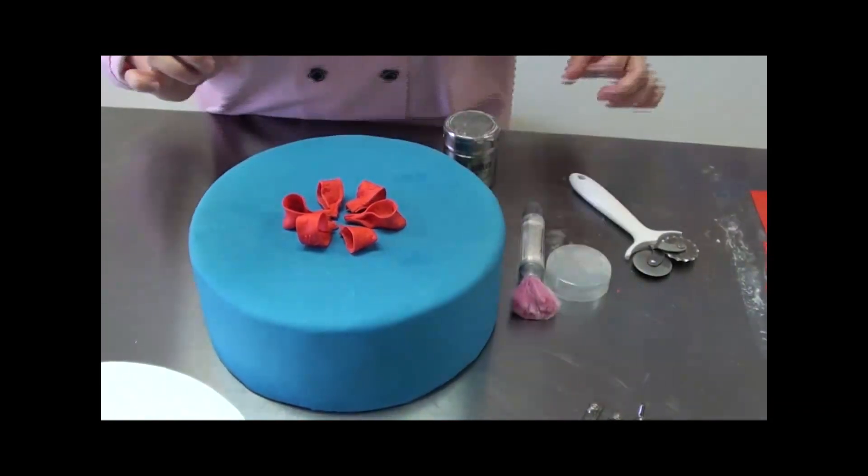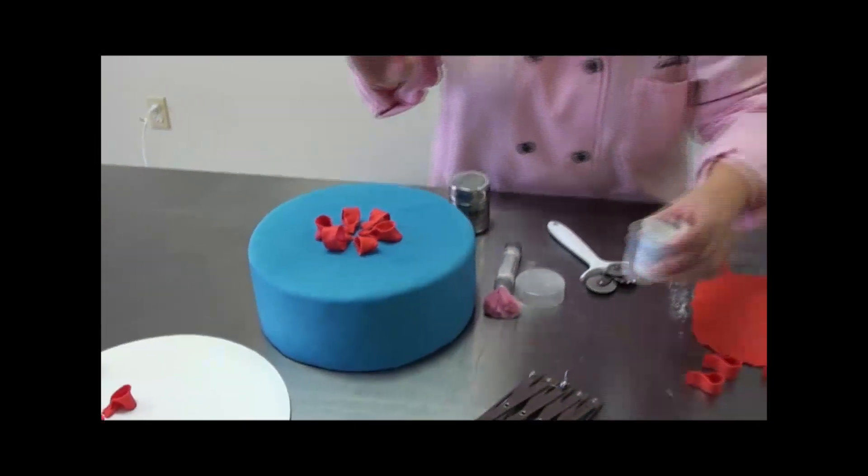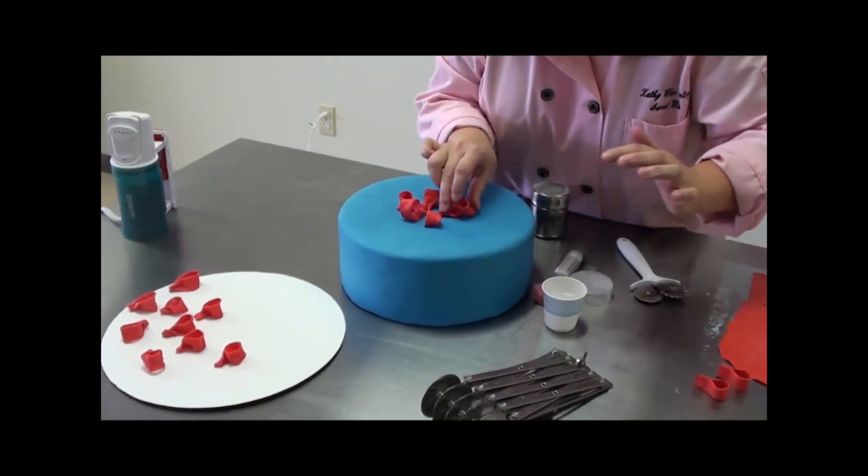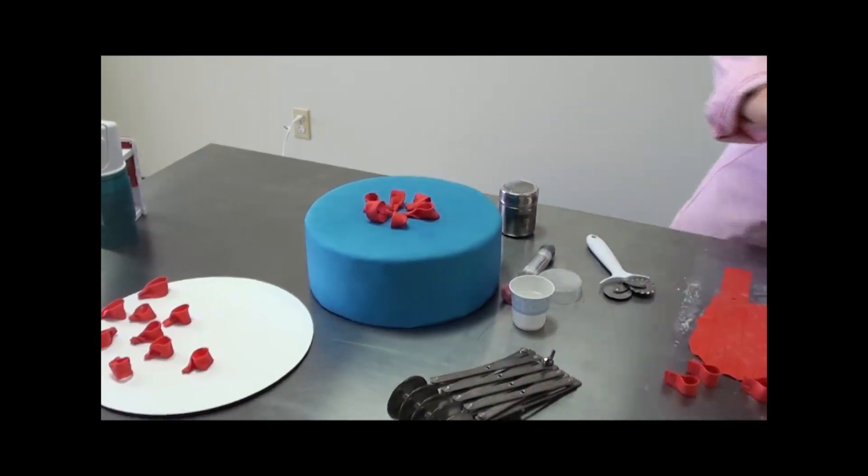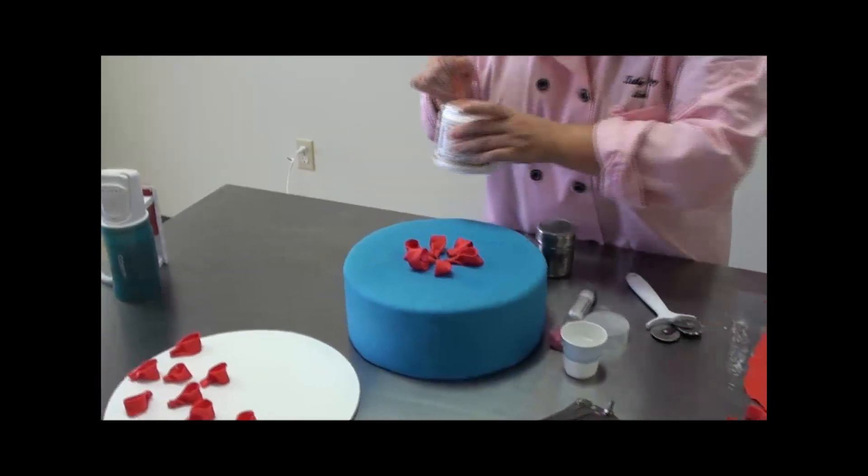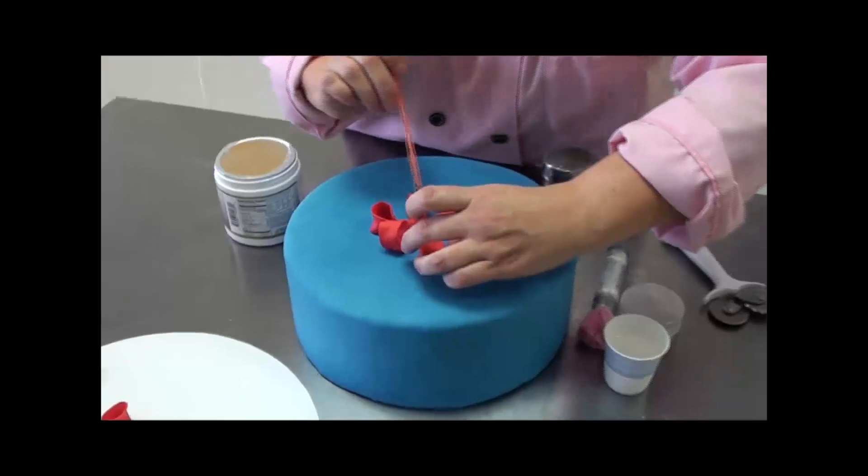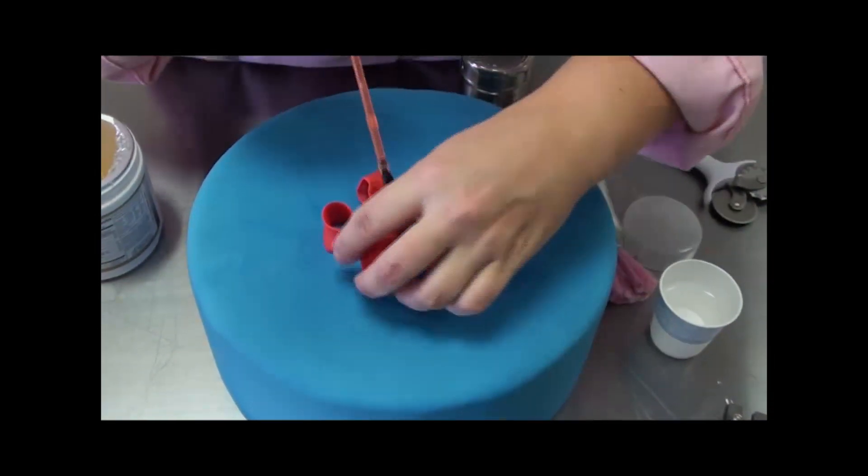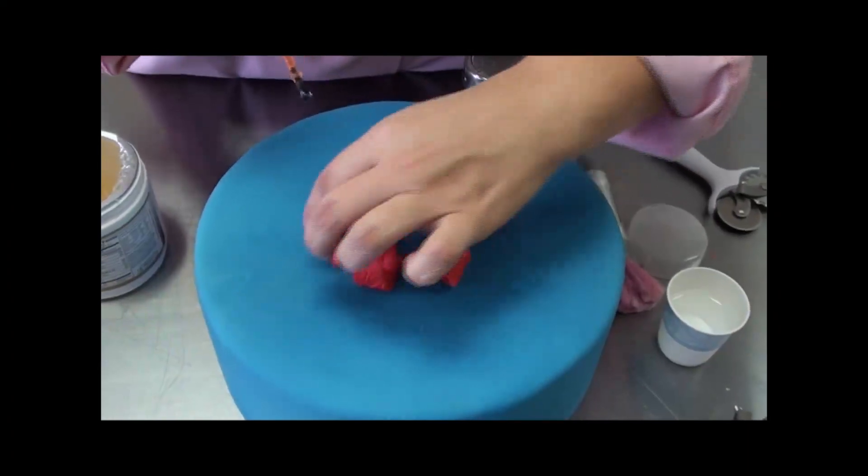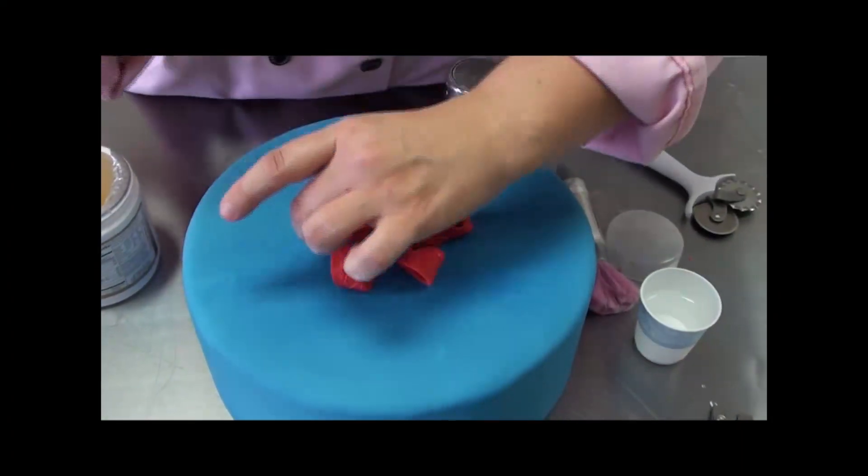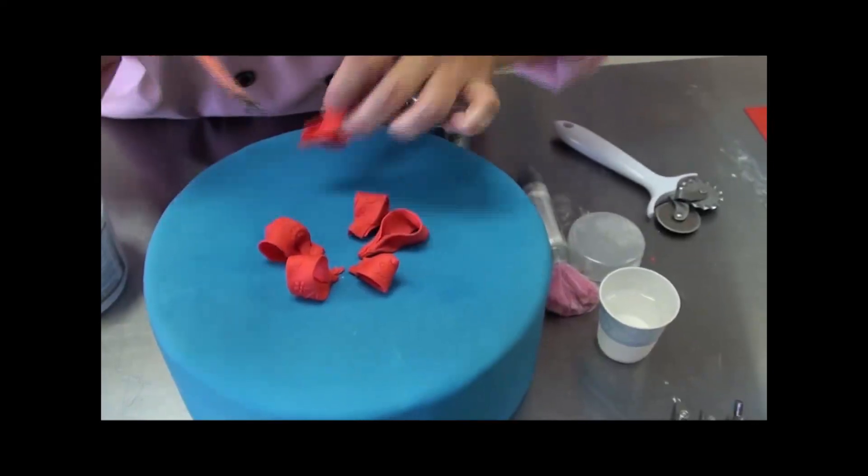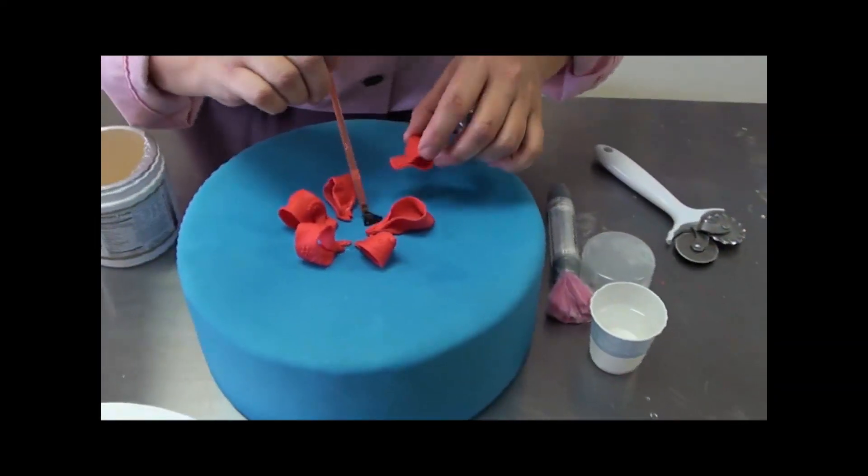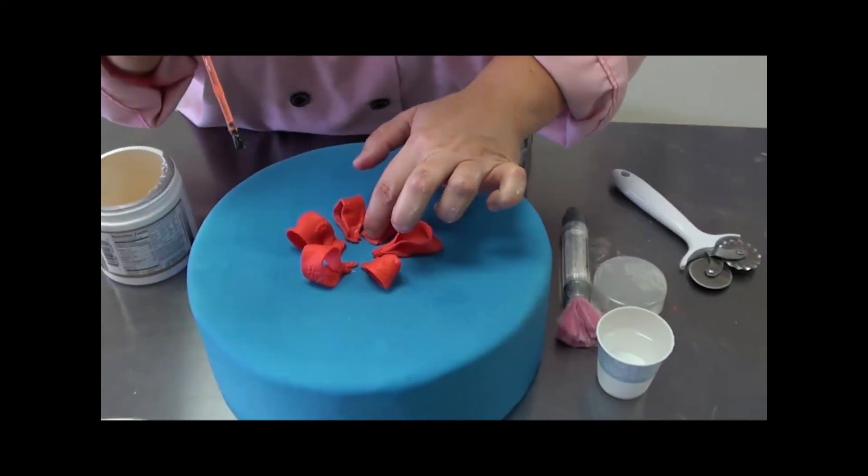And then that's when you can go back. If they're nice and fresh, you can just use water to adhere them with a little dot of water there. And if you have let them dry overnight or longer, you can use a little bit of clear piping gel and just put a little bit of glue there and stick it right back down where it was. All right, so six loops on the bottom. Last one.